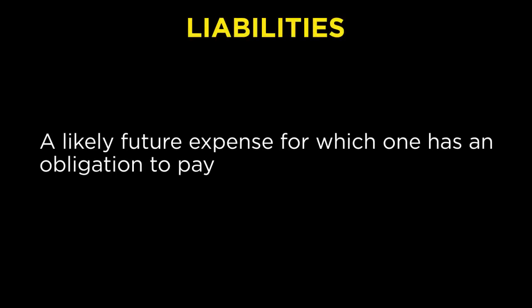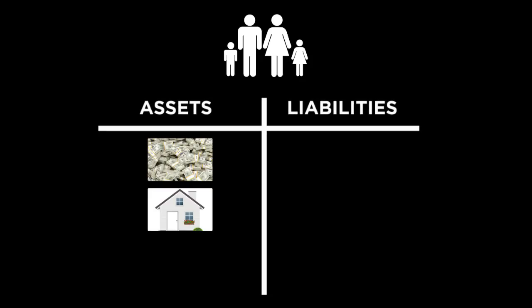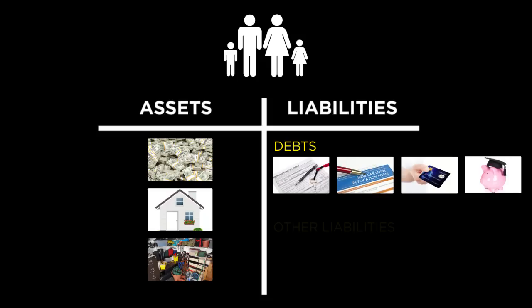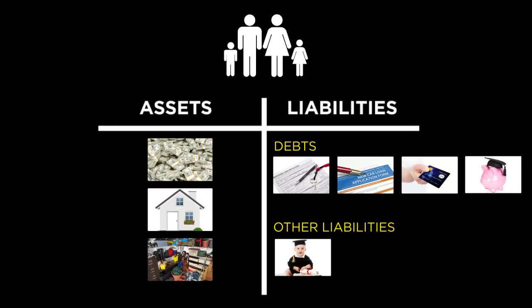A liability is a likely future expense for which one has an obligation to pay — not just the absolute legal requirements to pay, which are the debts, but also any outstanding obligations. For a family, their assets would be cash in the bank, home equity and other real estate held, and the things in their home that they owned. The family's debts would typically be a mortgage, an auto loan, credit card debt, and perhaps student loans. Future liabilities might include college educations for children not yet fully saved for, or taking care of aging parents whose own resources are insufficient to cover their future needs.